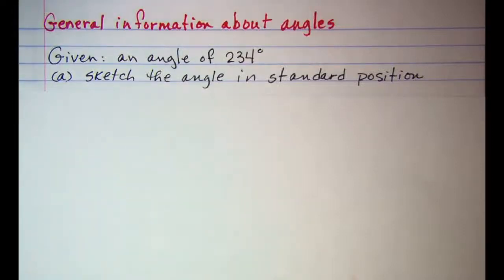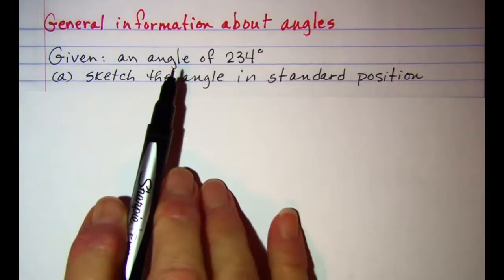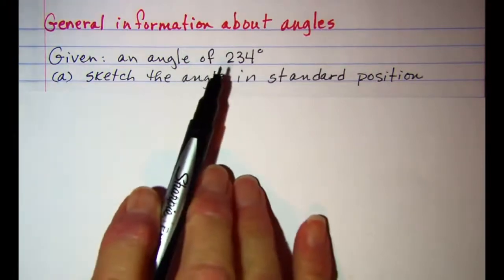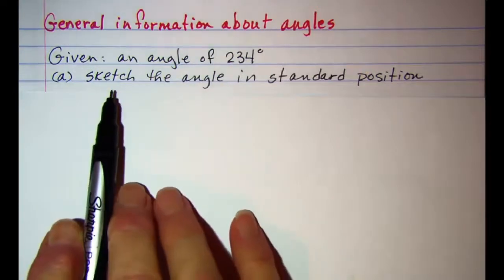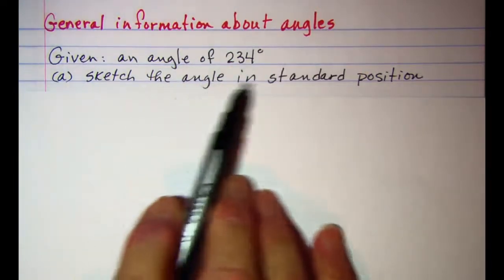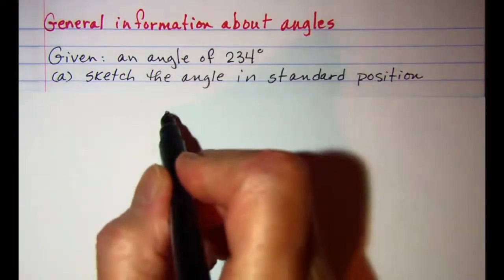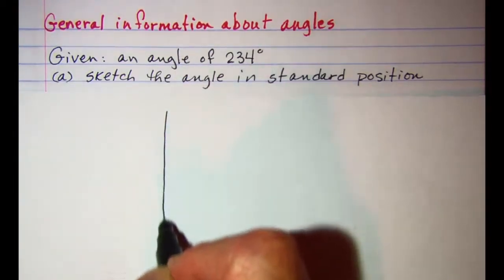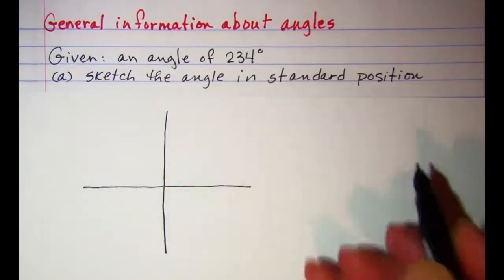In this video we'll be looking at some general information about angles. Our first thing we're going to look at is the angle of measure 234 degrees. We're first asked to sketch that angle in standard position. In order to do that we need to realize first of all our quadrantal angles.